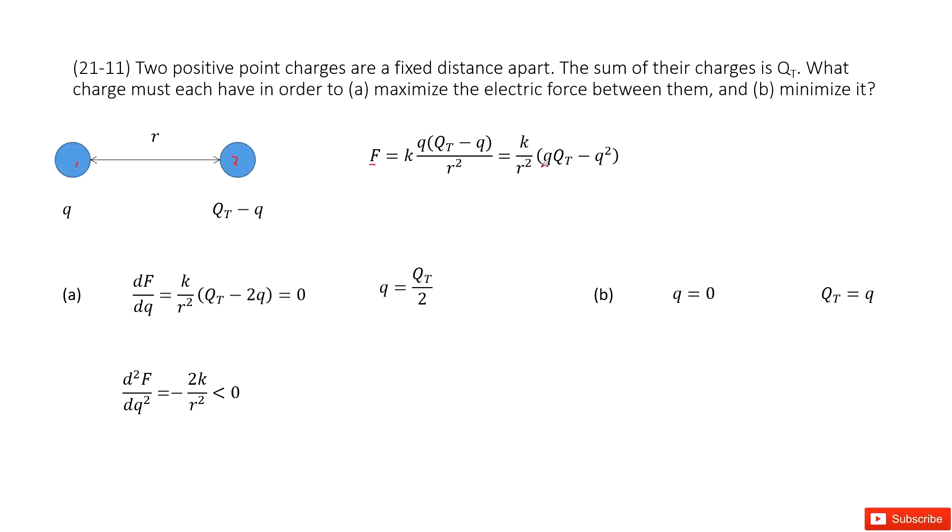So this is a function about Q. This is the independent variable. Now we need to find the Q to make the F maximum.